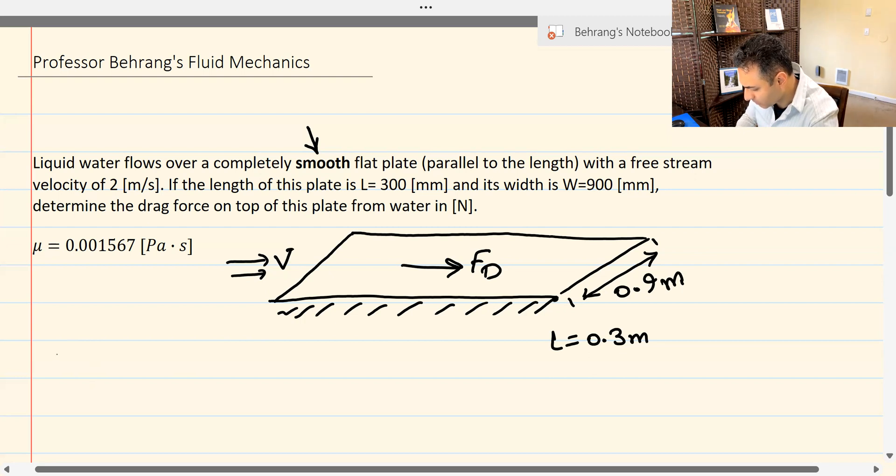First step, let's calculate Reynolds number. Because it's liquid water, it says liquid water here, so I'm going to use density 1,000 kilograms per meters cubed, basic SI units. So density would be 1,000 kilograms per meters cubed. Viscosity is given.